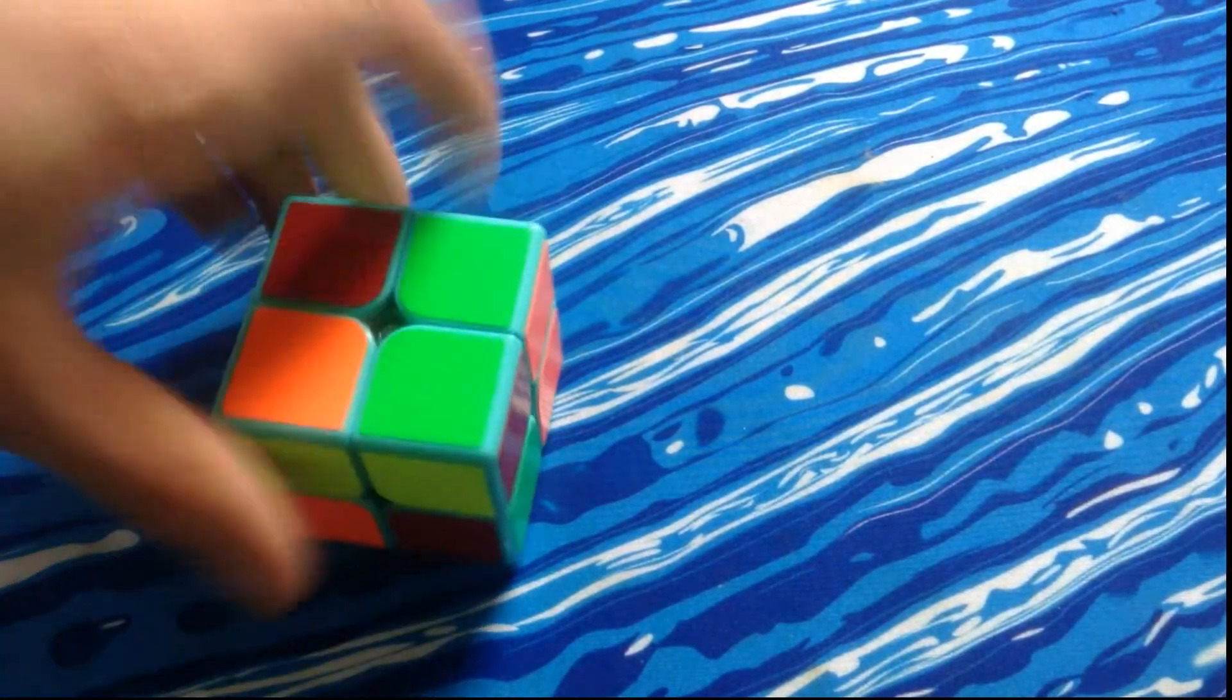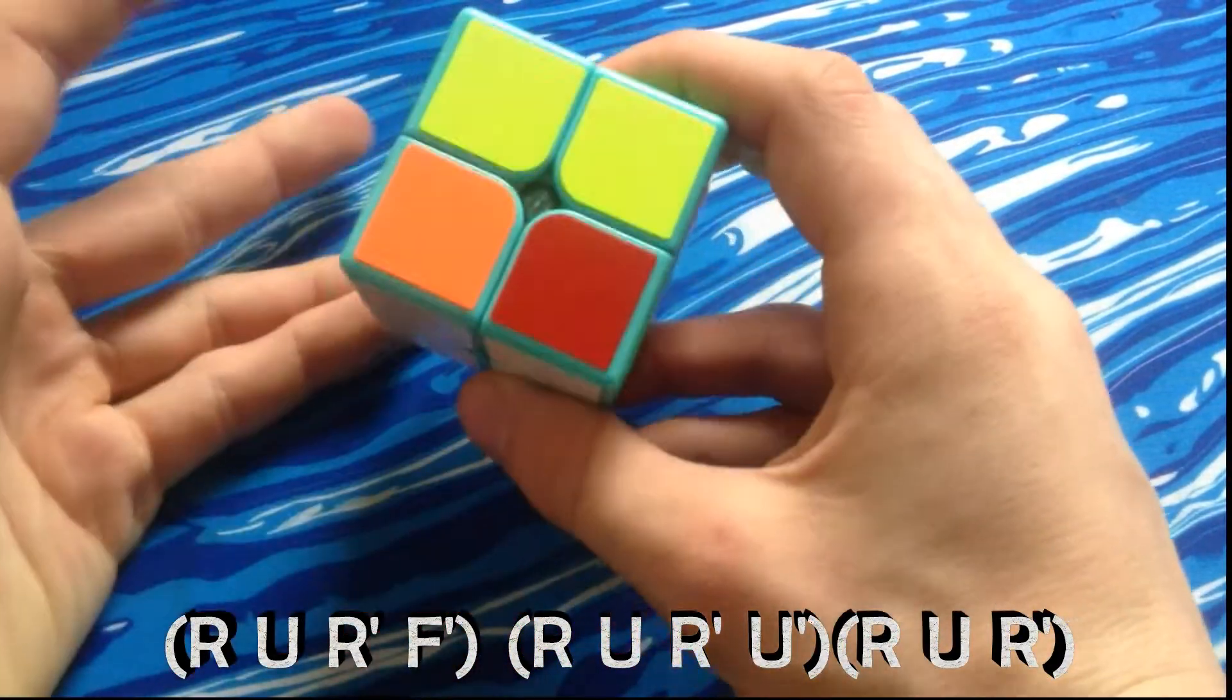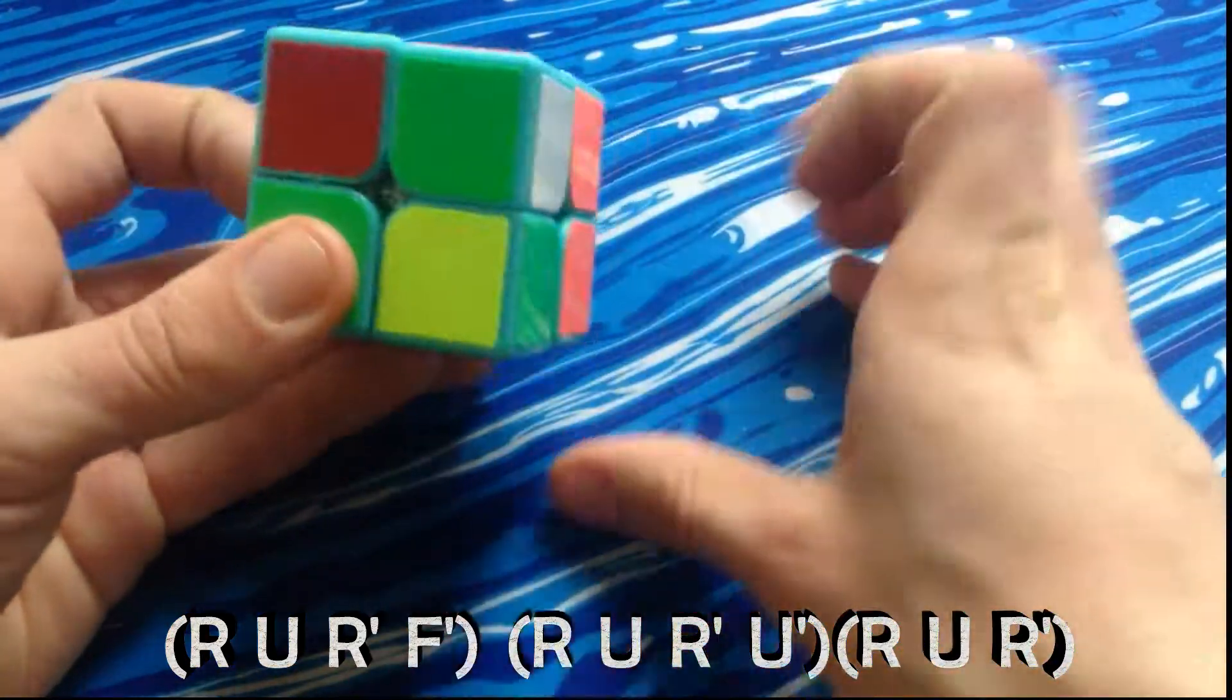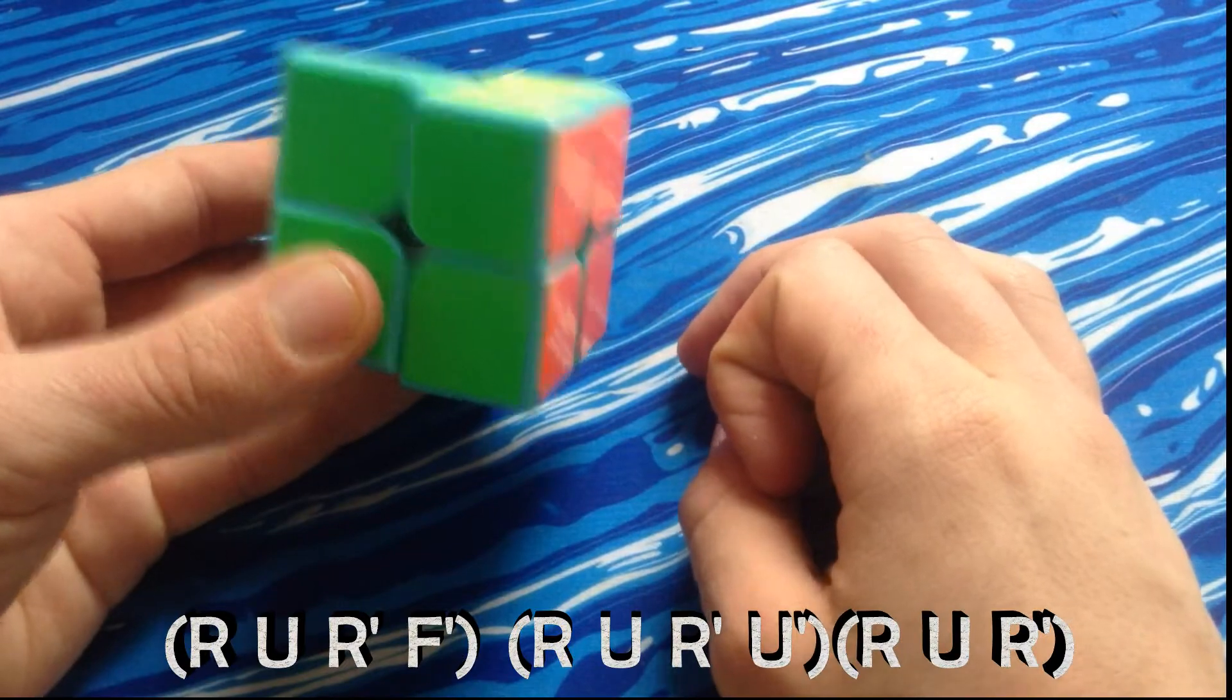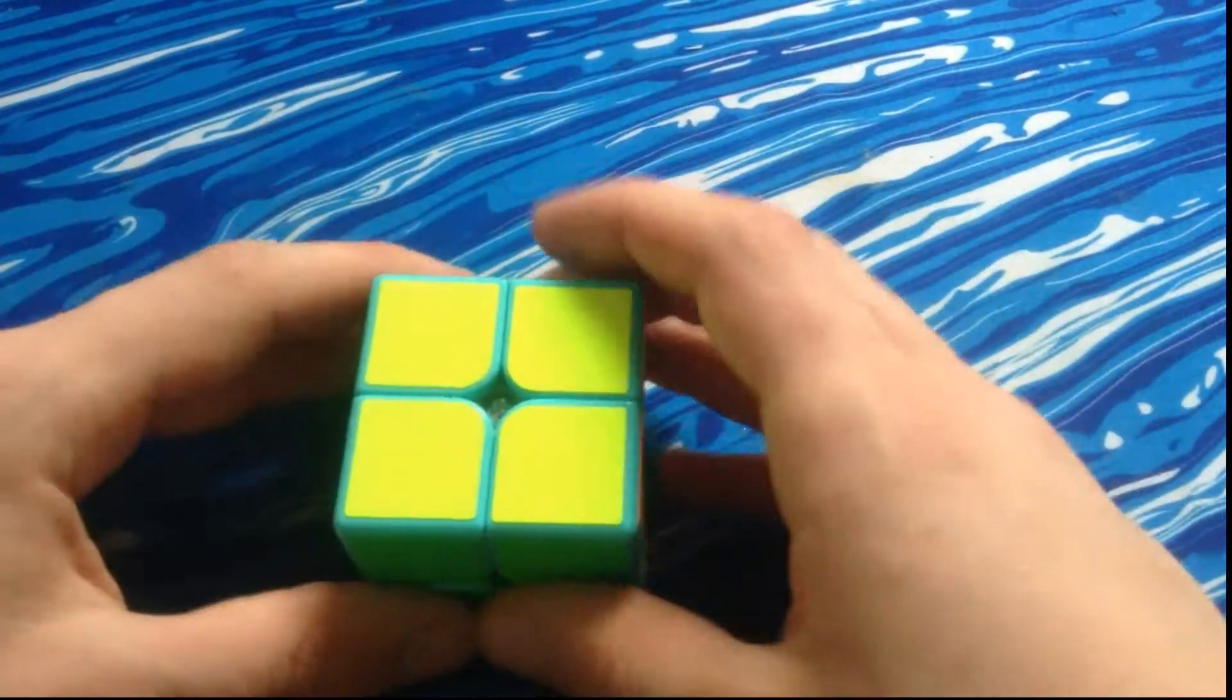The next case I'll show is this easy H algorithm. So this is made up of three simple triggers. The first of which is R U R' F', and then it's sexy move R U R'. So as you can see, that's very easy to learn since it's of course three very simple triggers.